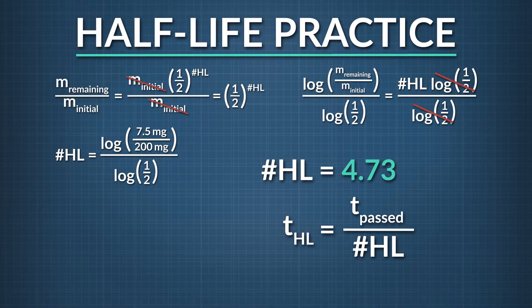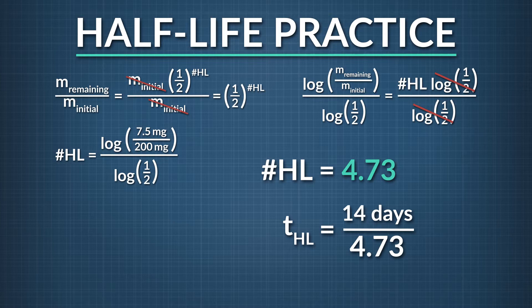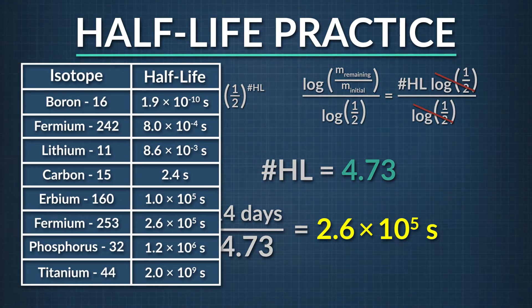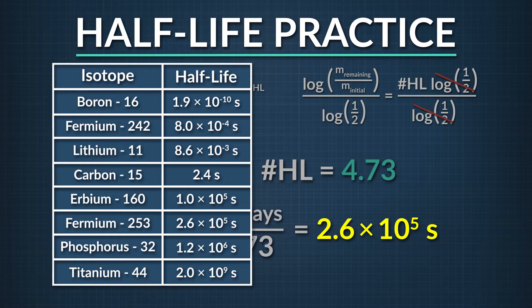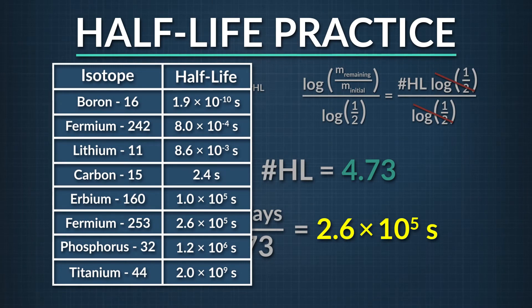When we plug in our numbers, we find that the time passed, which is 14 days, divided by the number of half-lives, which is 4.73, gives us a total time for the half-life of 2.96 days. That's about 2.6 times 10 to the fifth seconds. Now we know the half-life of our unknown sample. So what isotope is it? Looking at the given table of isotopes, we see a match between the half-life we calculated and fermium-253. Based on its half-life, the mystery sample is made of the radioactive isotope fermium-253.